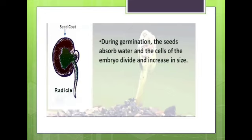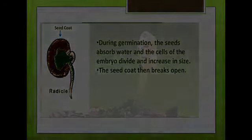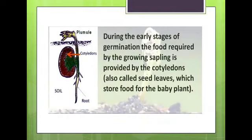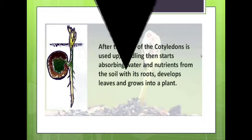During germination, the seeds absorb water and the cells of the embryo divide and increase in size. The seed coat then breaks up, and first the root or radicle grows downwards. During the early stages of germination, the food required by the growing sapling is provided by the cotyledons, also called seed leaves, which store food for the baby plant. After the food of the cotyledon is used up, the seedling starts absorbing water and nutrients from the soil with its roots, develops leaves, and grows into a plant.